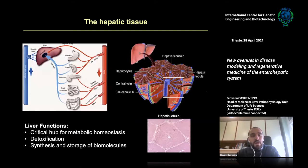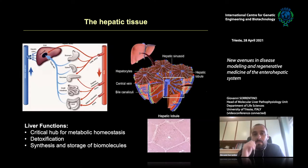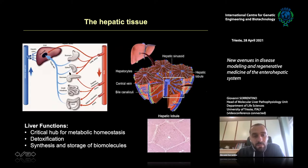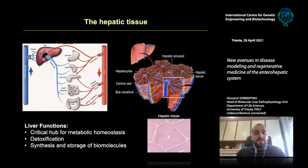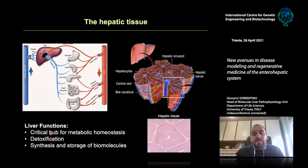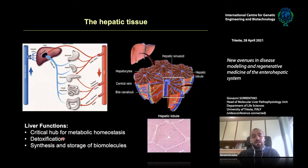The liver is the biggest organ in our body. It receives blood from the stomach, spleen, pancreas, and intestine, acting as a filter. Blood is filtered and sent to the systemic circulation through the hepatic veins. The liver has three main functions: it is a critical hub for metabolic homeostasis, it is important for detoxification of toxins and drugs, and it is key for synthesis and storage of biomolecules such as cholesterol and glycogen.